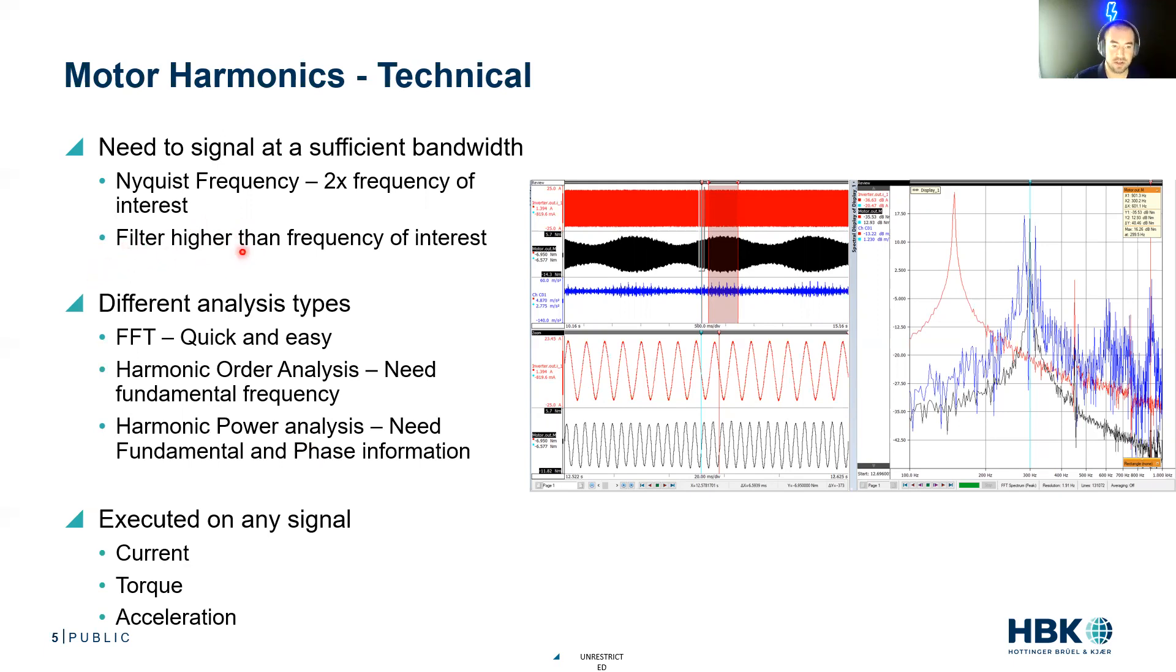And we want the frequency of interest to be within the filter constant of our frequency. So your instrument's going to have a filter on it. If your fifth harmonic is at 500 hertz, you probably want your filter to be at that 3 dB point of 600 hertz, which probably means you're sampling at something like six kilohertz or higher. Filter higher than the frequency of interest and sample much higher than the frequency of interest.